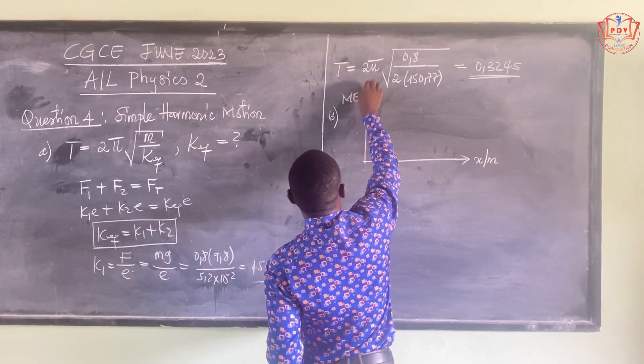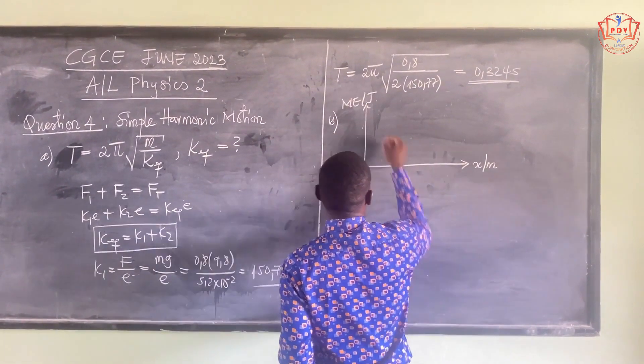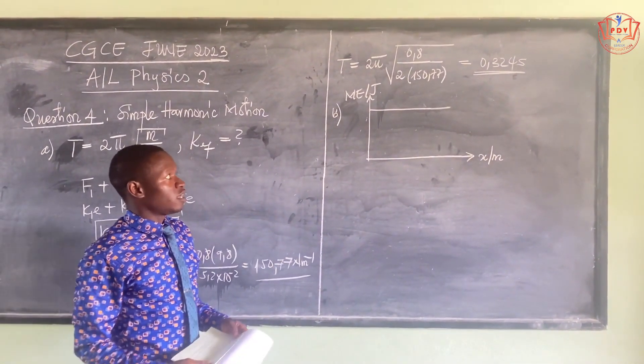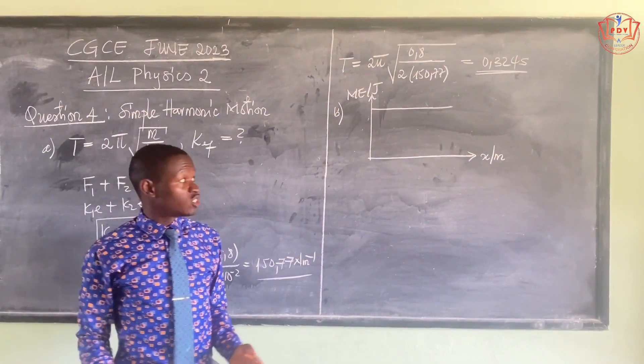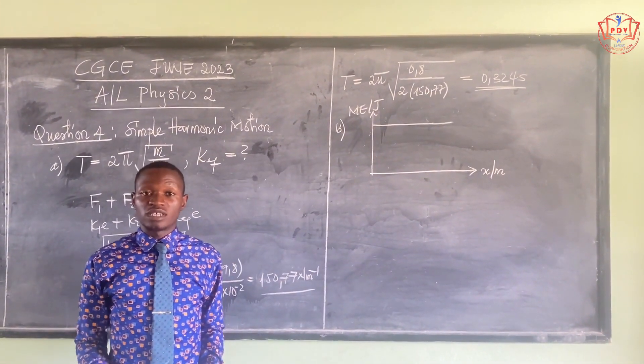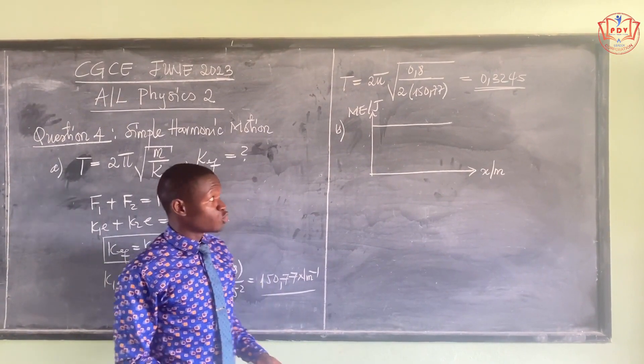The graph of mechanical energy in simple harmonic motion is simply a straight line. The mechanical energy is in joules, and the graph is a straight line showing that the total energy does not change. The total energy remains constant when the mass is undergoing simple harmonic motion.